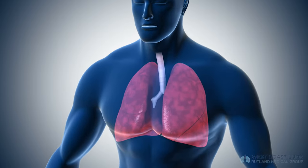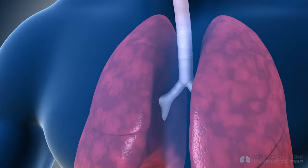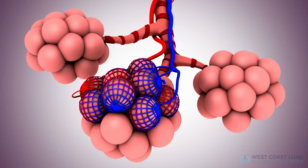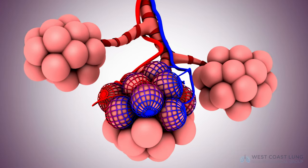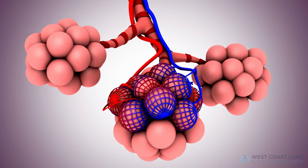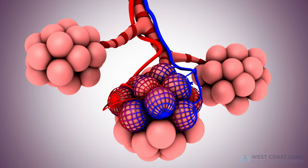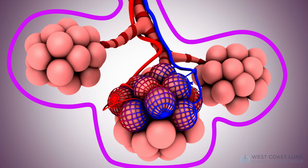When thinking about interstitial lung disease, we have to understand the basics again. We always have to talk about the lung. The lung is a bunch of pipes that lead to a bunch of balloons stacked on top of one another. The basic unit of function of the lung is called the secondary pulmonary lobule. The secondary pulmonary lobule is outlined by interlobular septa, which are a part of the interstitium.